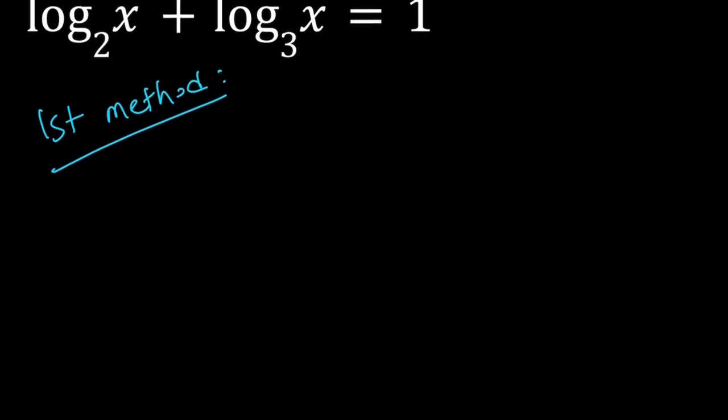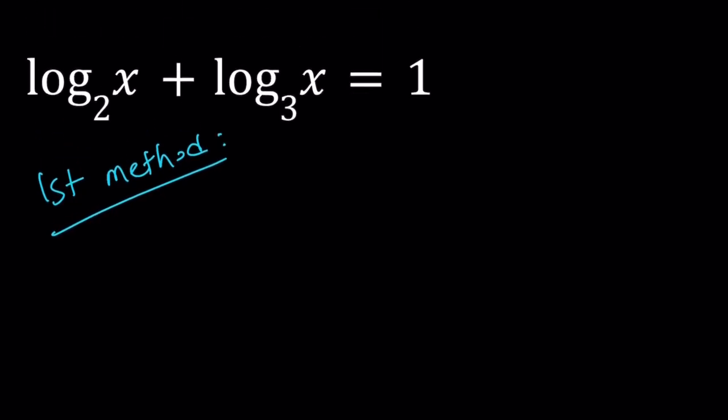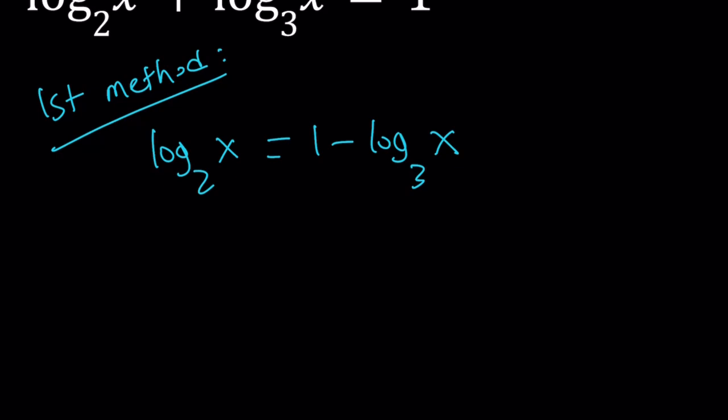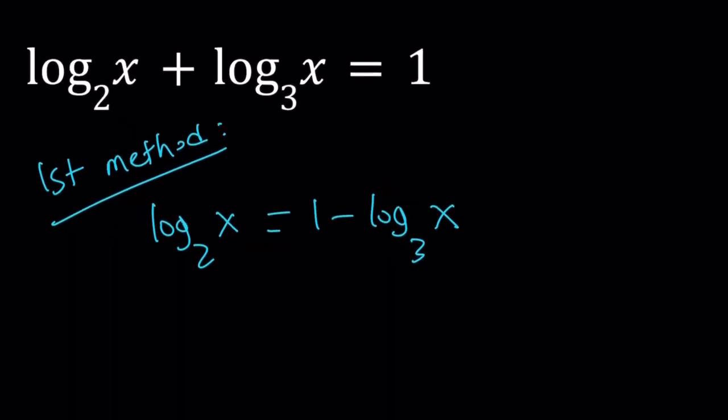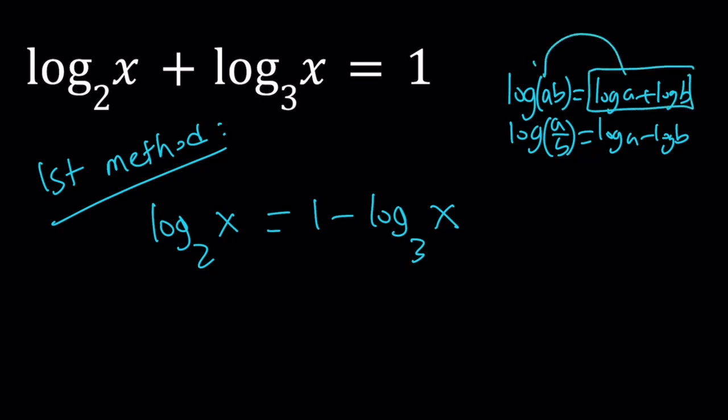So for my first method, I'm going to isolate log x with base 2. If you subtract log x with base 3 from both sides, you get the following. Now here's the problem: I have two logs on the same side. We have nice properties like log ab can be written as log a plus log b, and log a over b can be written as log a minus log b. So why not use this property to condense or expand depending on which direction you need to go?